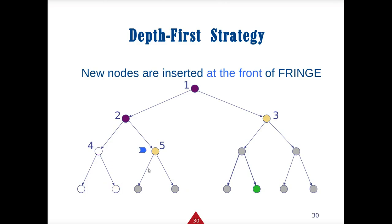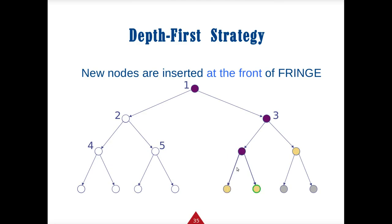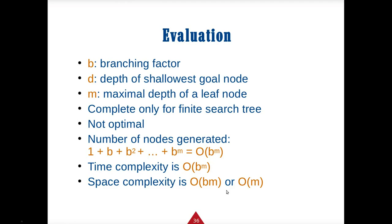The depth-first fringe keeps updating as we search deeper paths. We search the front elements, go back to 3, add its successors to the front, search those, and eventually find our goal node.